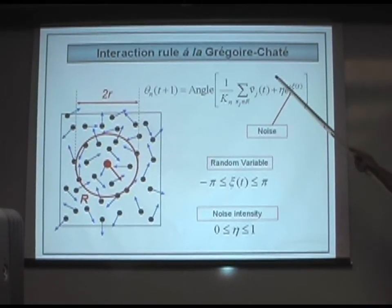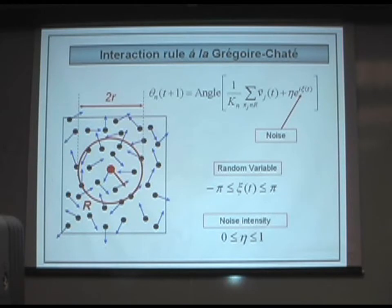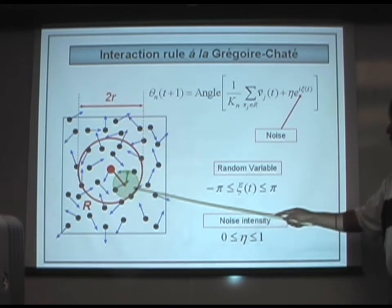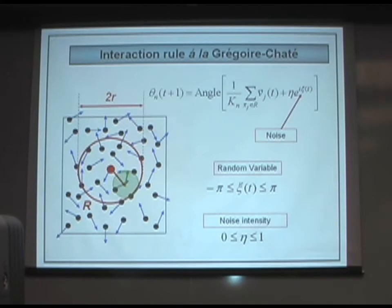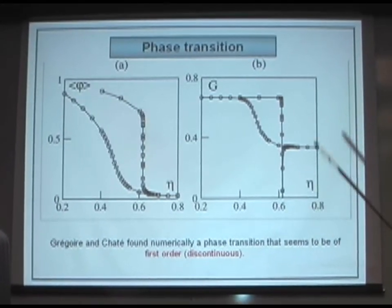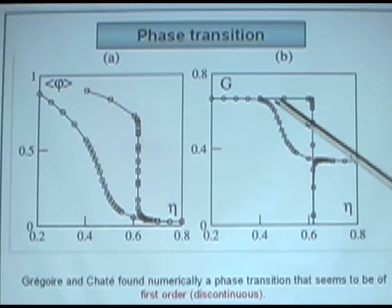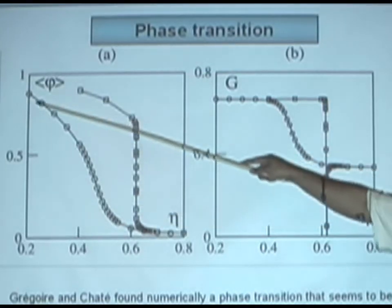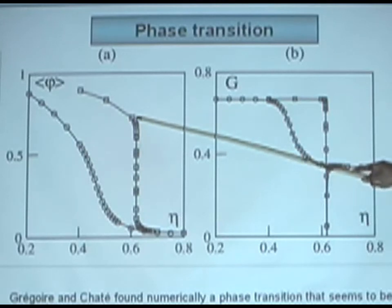Once they have received this signal, they deterministically know what to do. So this innocent step of introducing noise inside the angle function involves quite different interaction rules between the particles. With this, everything is the same, except that now to the average velocity we add a random vector which can be anywhere in this circle, and then the particle moves in the direction of the resulting vector. And with that innocent change, they have a discontinuous phase transition, as is shown here. This is for the original Vicsek model, and this is for the Chaté model.